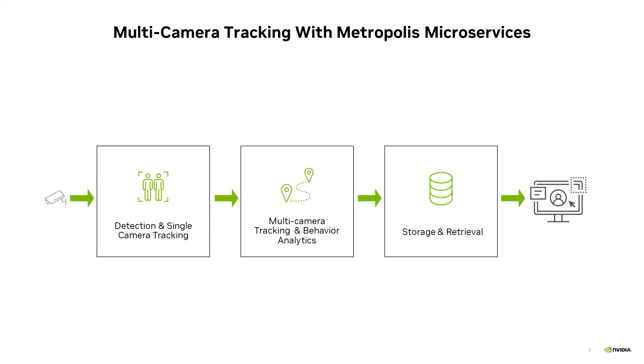Detection and single camera tracking, which happens closer to where the cameras are located, then taking the intelligence from individual sensors, fusing them together to track objects across cameras, and finally storage and output of the results.